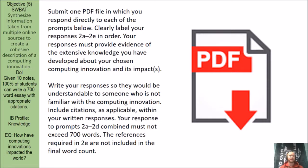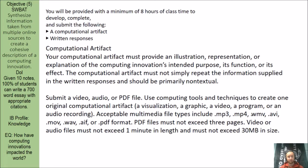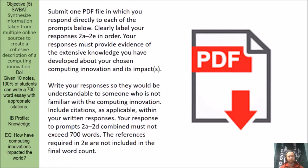When you submit, you will be responding directly to each prompt — clearly label your responses 2A through 2E in that order. Your responses must provide evidence of the extensive knowledge you have developed about your chosen computing innovation and its impact. You have eight hours of class time to get this done. Write your responses so they would be understandable to someone unfamiliar with the computing innovation, and include citations as applicable. Your response to prompts 2A through 2D combined must not exceed 700 words. References in 2E are not included in the final word count.